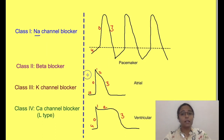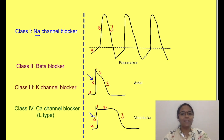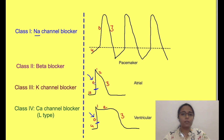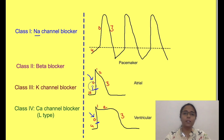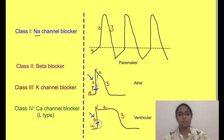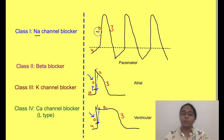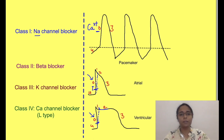Sodium channel blockers, i.e. class 1 antiarrhythmic drugs, can block phase 0 in contractile cells. Due to this action, the threshold for phase 0 of action potential increases. At threshold, many sodium channels open, so if they are blocked, fewer channels will be available, increasing the threshold. It will also decrease the slope of phase 0, causing slowing of depolarization. Note that they won't affect the action potential of pacemaker cells, since depolarization there is caused by calcium.